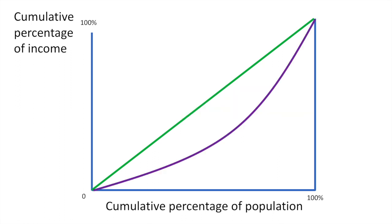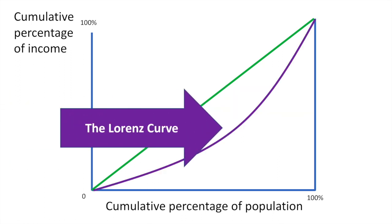Most economies operate along a curve that looks something like this, called the Lorenz curve. Like the previous two lines, it represents the distribution of income across the population. In this case, there is some inequality of the distribution that has been introduced.